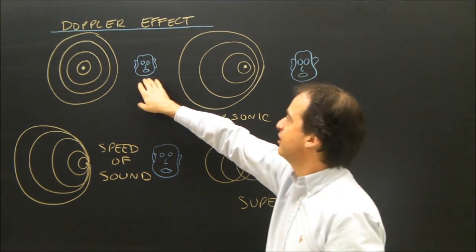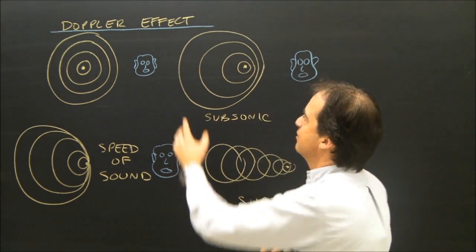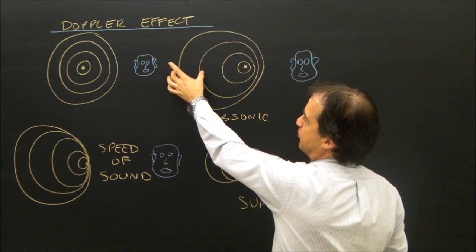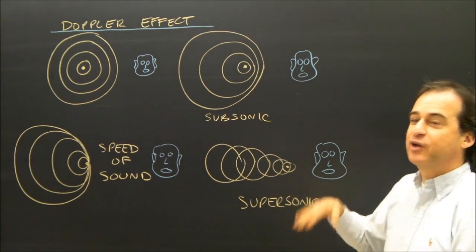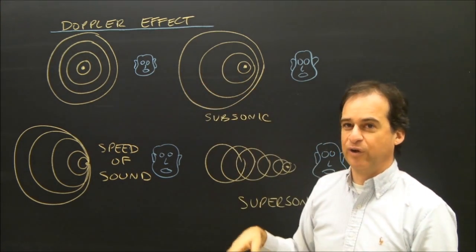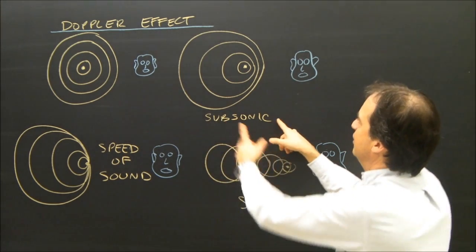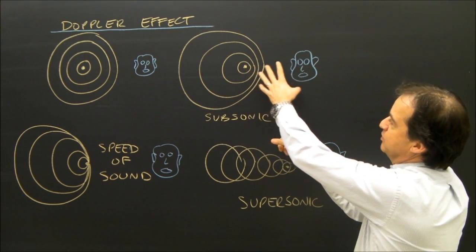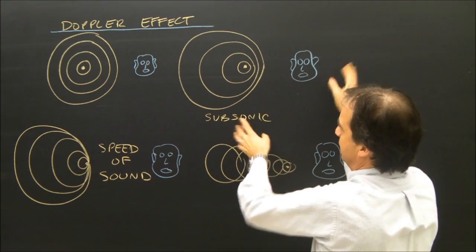But this person over here, listening to this object, the sound waves getting to him, well, they're spread apart further. So their frequency is lower. This person hears these sound waves as a lower note. So if you're standing here, as the sound goes by, it gets higher pitched one frequency, and then lower pitched frequency.